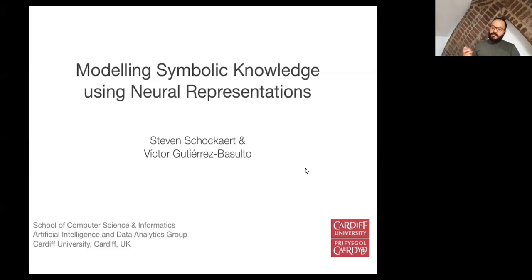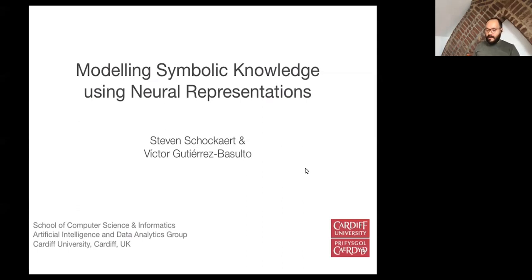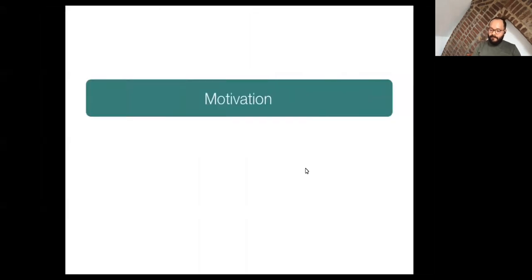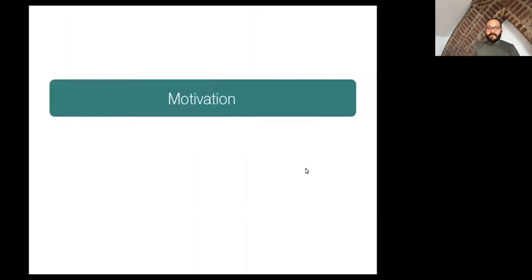The main objective of this tutorial is to understand the relationship between symbolic knowledge and neural representations. The main question is why we would like to do this. Why isn't it enough to stick to just one of the approaches to AI — either the knowledge representation or symbolic approach, or the neural one? I want to motivate why this is not the case.